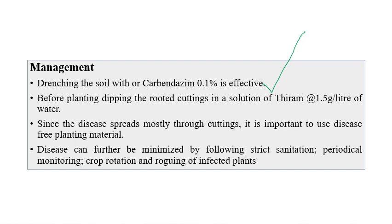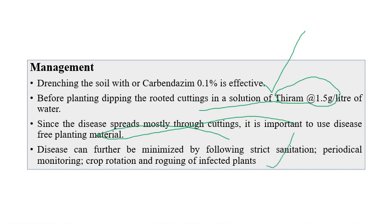Since chrysanthemum propagates through root cuttings, there is a chance of transferring the disease through infected cuttings. Using disease-free or certified planting material is very important to prevent this disease. Root stalks can be dipped in a solution of thiram, which acts as a seed treatment fungicide, recommended at 1.5 grams per liter of water. This can be used for any propagating material — bulbs, seeds, or cuttings.